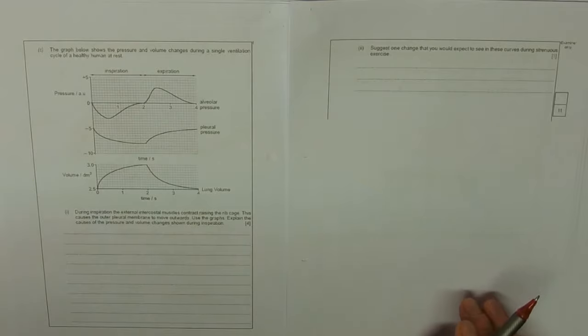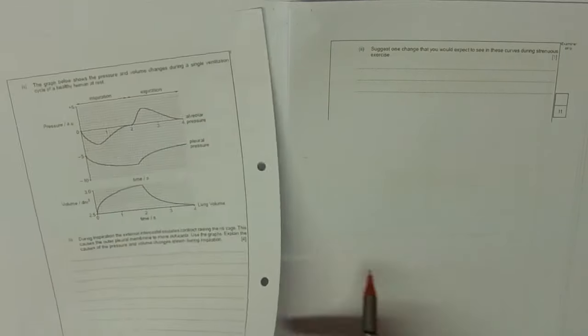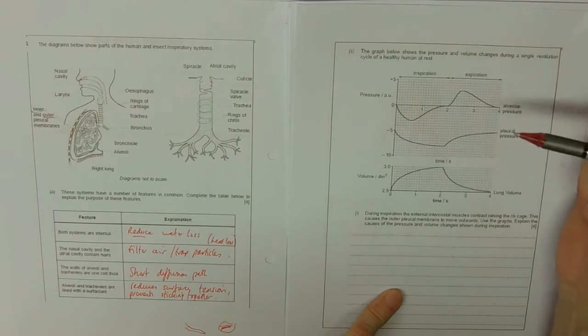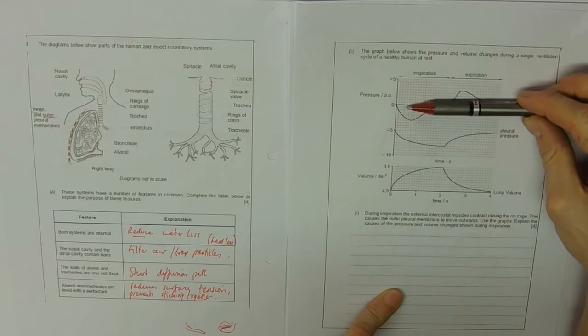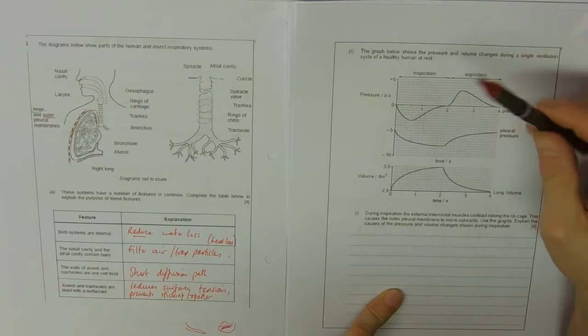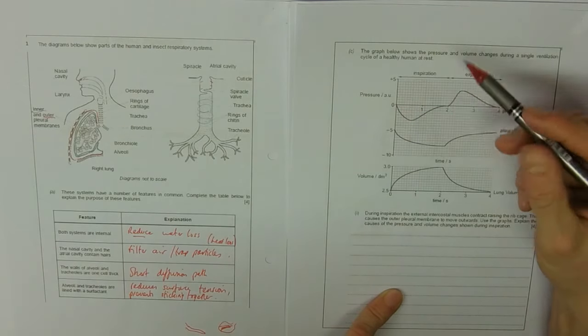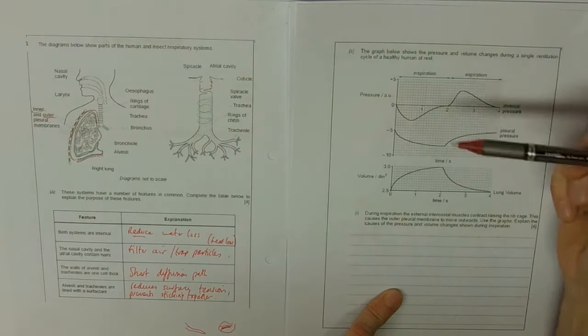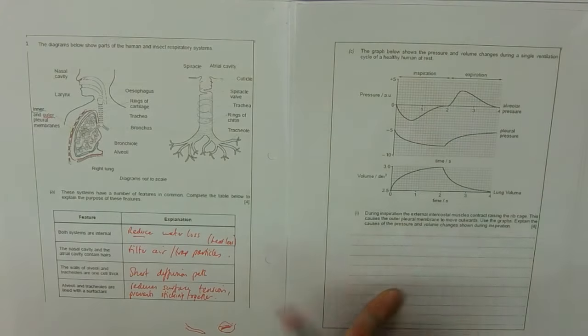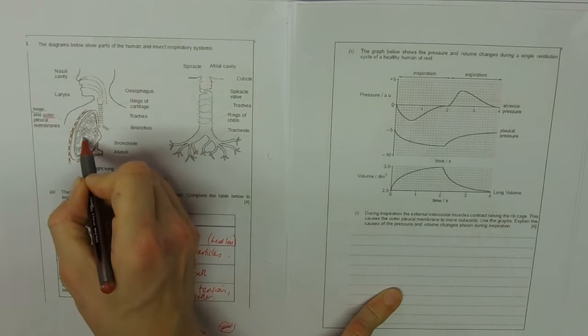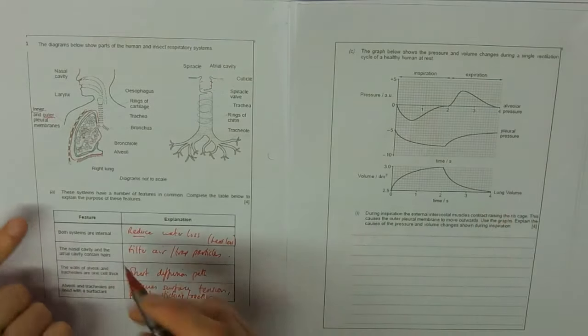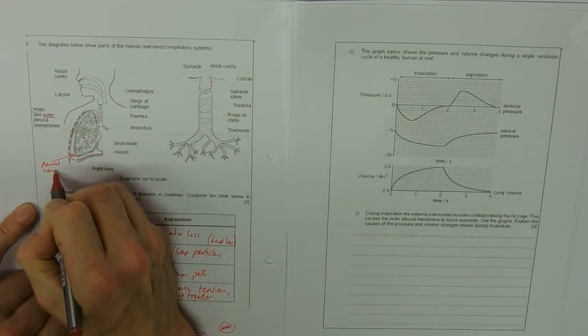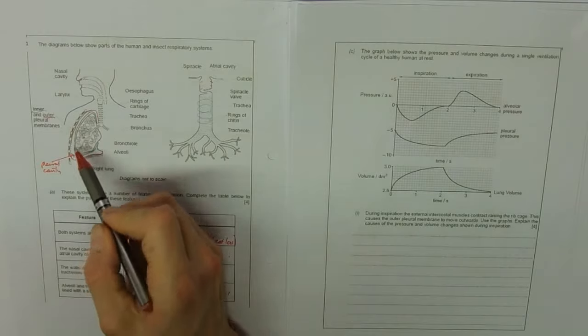Over the page, we've got a graph showing pressure and volume changes during a single ventilation. What does this graph show? The zero is zero difference in pressure. Anything below zero is kind of like a sucky kind of pressure, whereas anything above zero is a blowy kind of pressure. We can see both pressures in the alveolus, so that's inside here, and the pleural pressure, that's inside here, the pleural cavity. So the pressure is in two different areas.